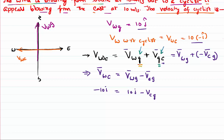Rearranging the terms, velocity of cyclist with respect to ground equals 10j cap plus 10i cap. So the cyclist's velocity is 10i cap + 10j cap.